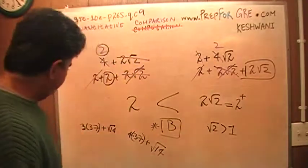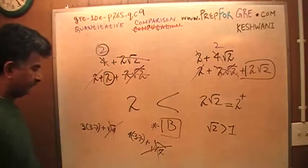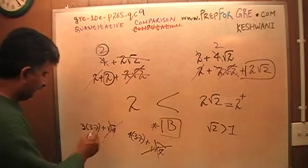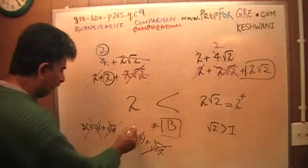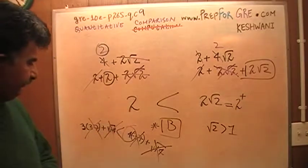So which one is bigger? Well, let's see. This root 14 appears in both columns. It plays no role. So, and then of course, this 37 appears on both sides. It plays no role. 4 is bigger than 3. The answer is b. That's all.